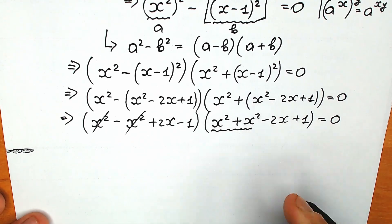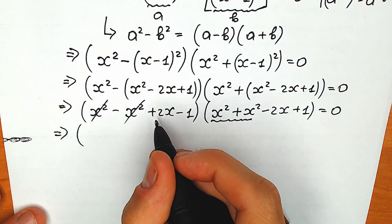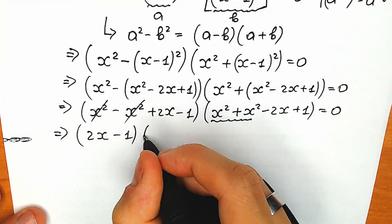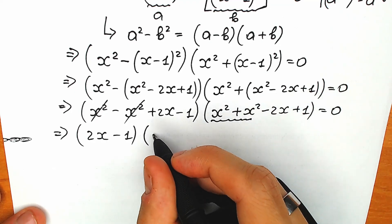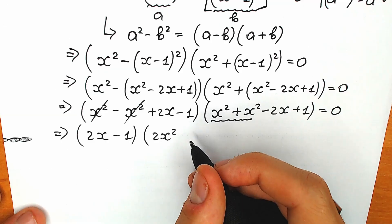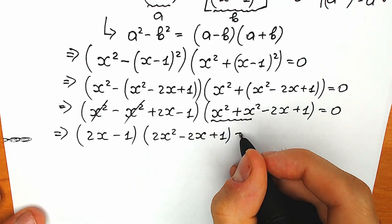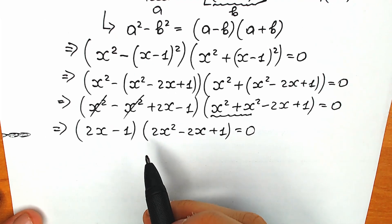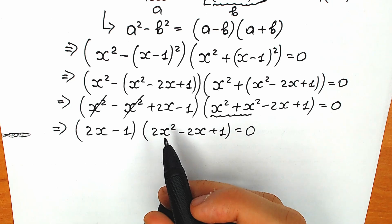x squared plus x squared gives us 2x squared. So on the left side we have 2x minus 1, and on the right side we have 2x squared minus 2x plus 1. We now have a product of two factors equal to zero, so we can write two separate equations.